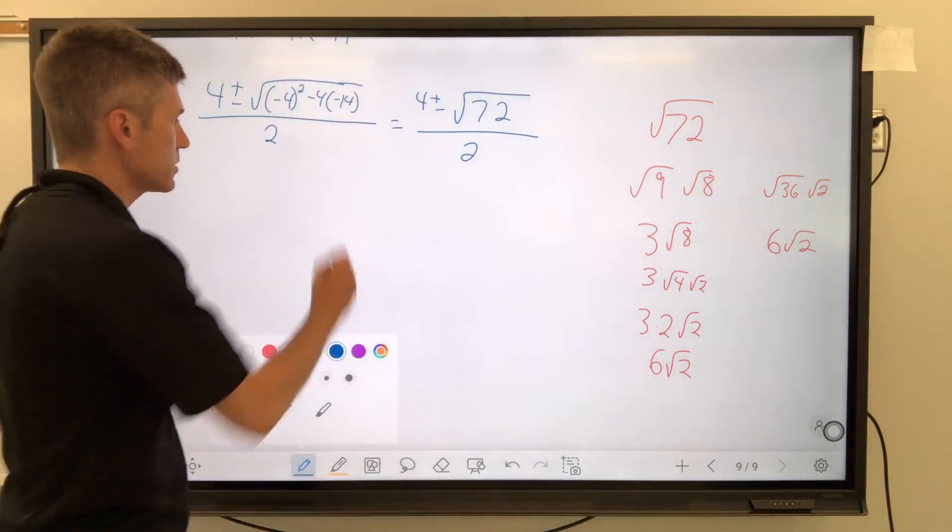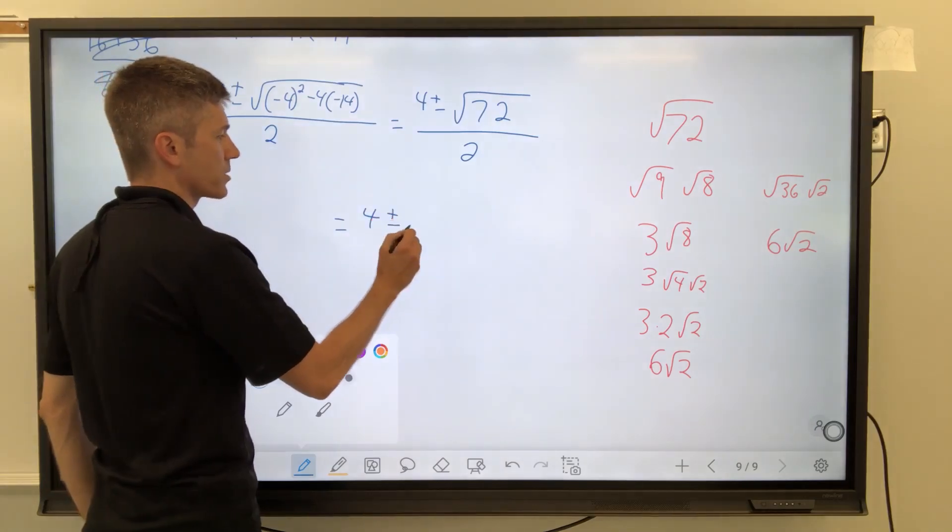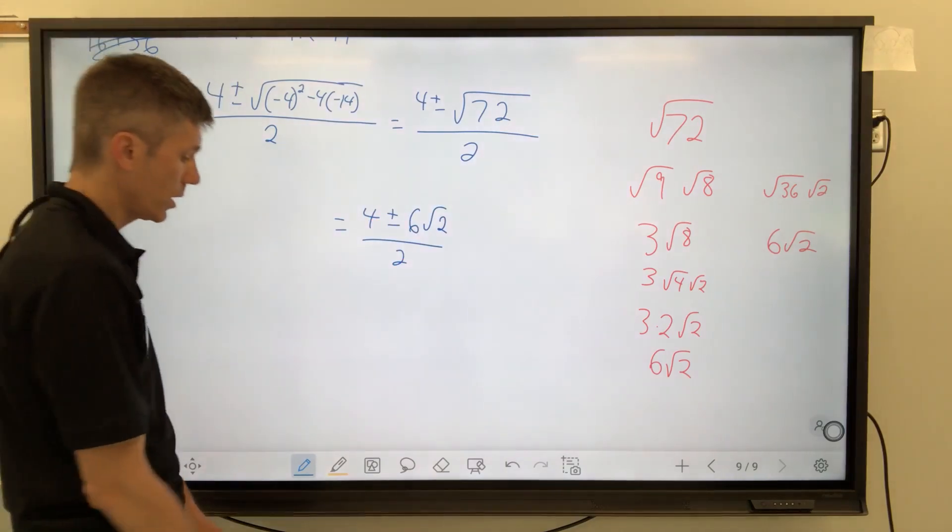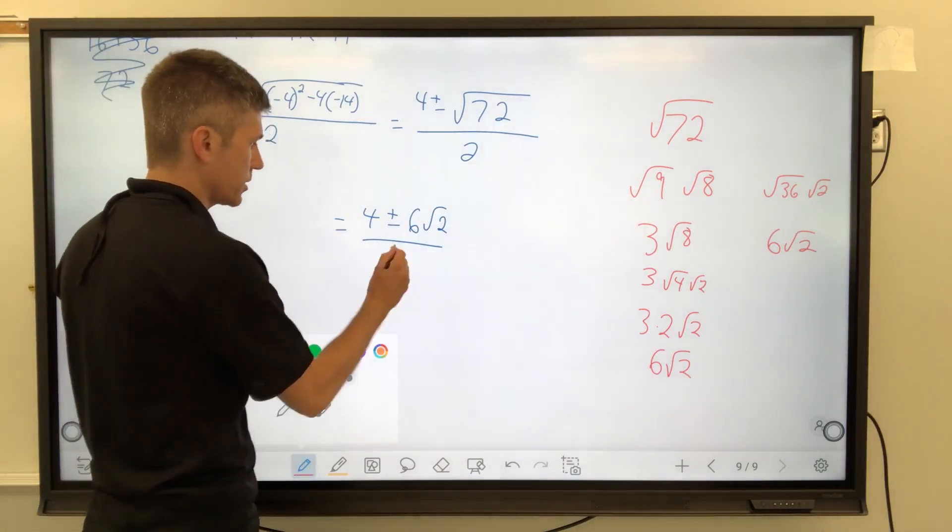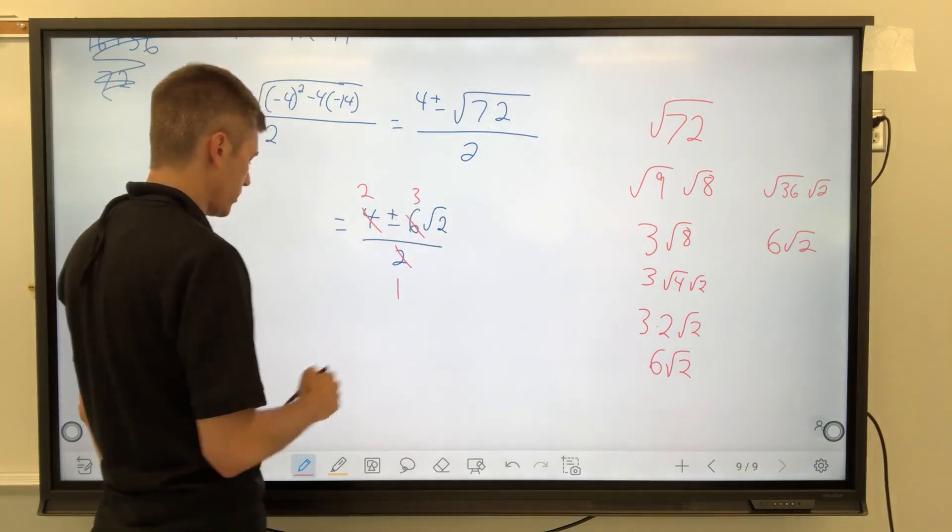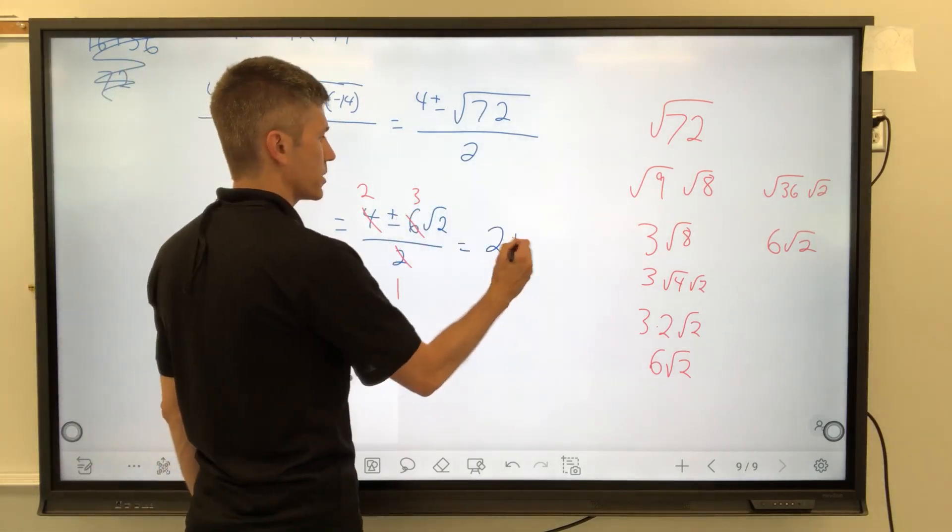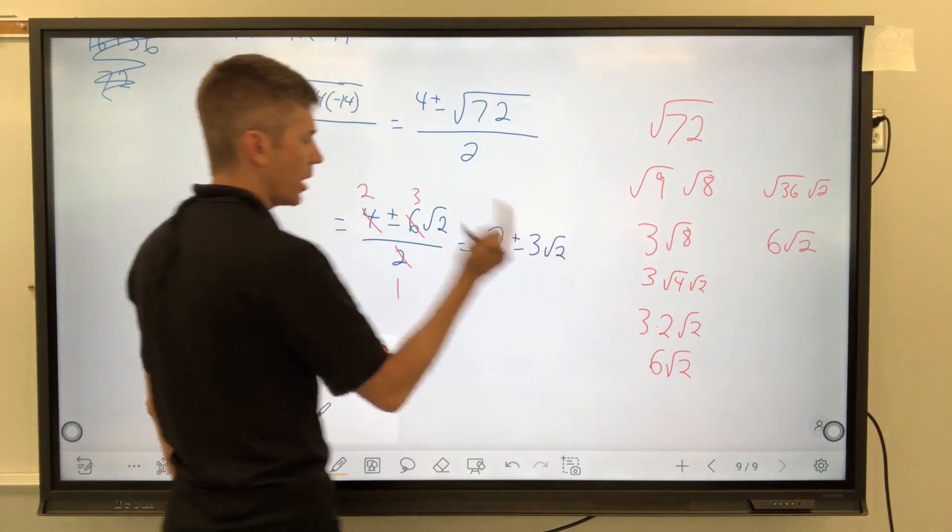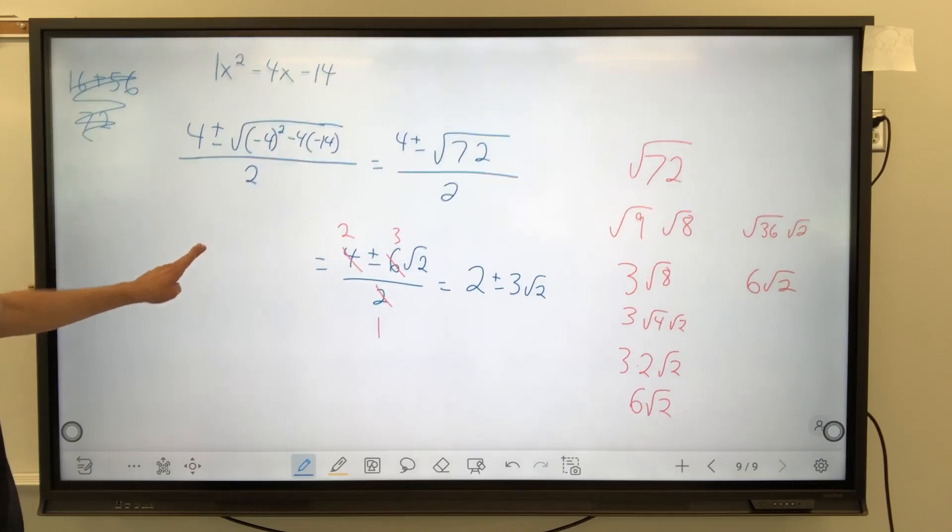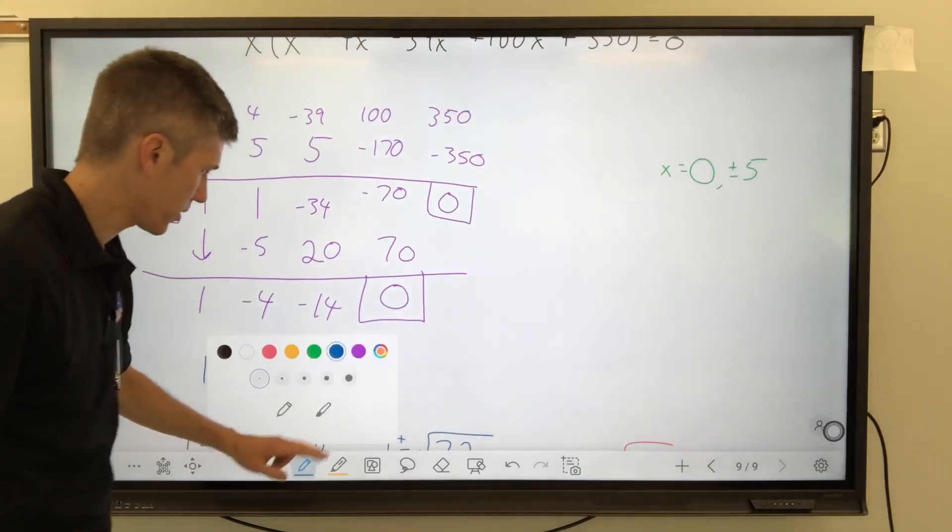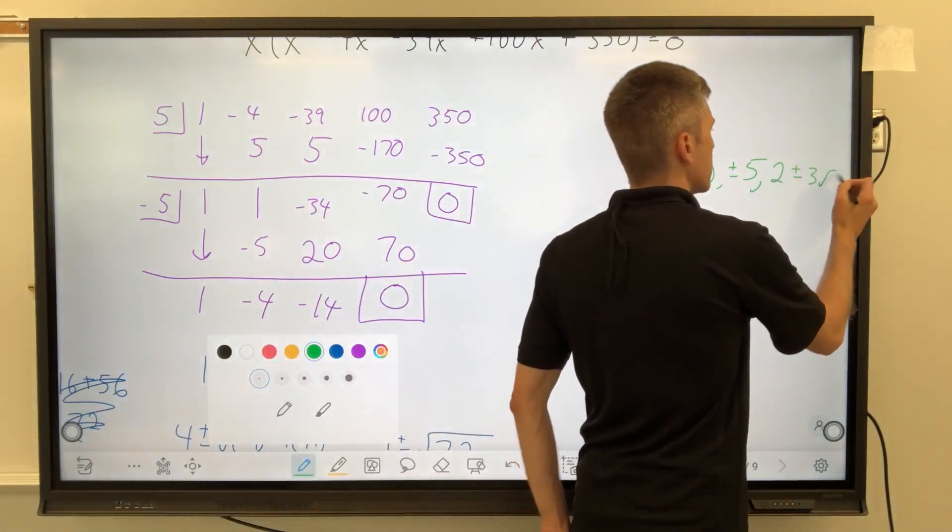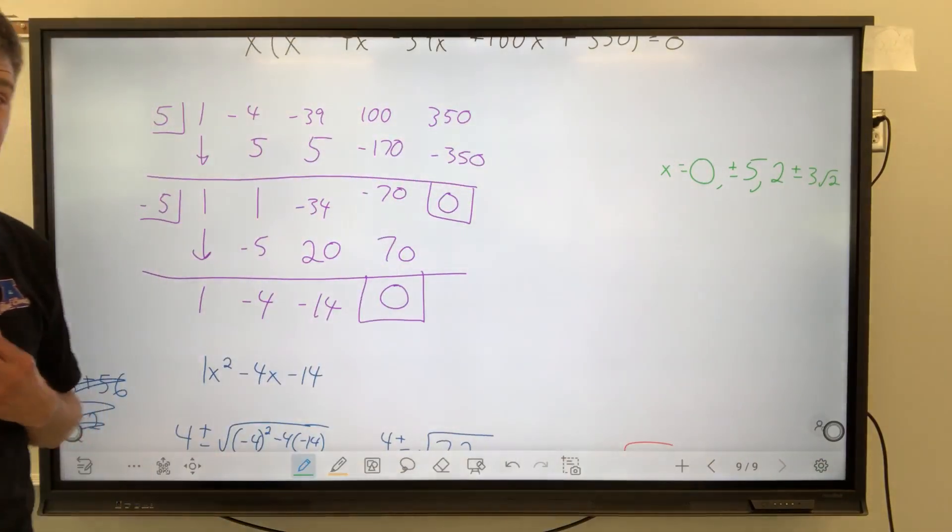So, we're still dealing with this. We have 4 plus or minus 6 square root of 2 over 2. I'm ready to divide every term by 2. And when I do, I'll switch colors again. 2 goes into itself one time. 2 goes into that twice, into that 3 square root of 2 times. It's going to give me 2 plus or minus 3 square root of 2 over 1. And those are my last two answers. 2 plus or minus 3 square root of 2. Let's write them in green over here. 2 plus or minus 3 square root of 2. So, I have my 5 answers now.